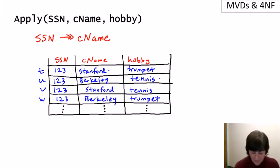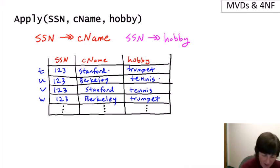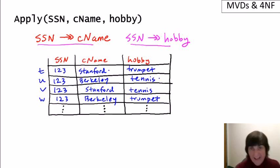By the way, one thing you might notice here is that we also have the multi-value dependency social security number multi-determines hobby. This is actually one of the rules for multi-value dependency, saying that when you have A multi-determines B then you also have A multi-determines rest, and we'll see some rules for multi-value dependencies later.